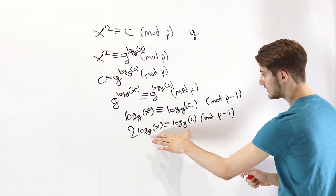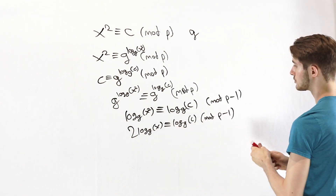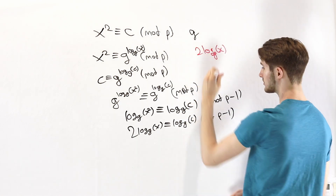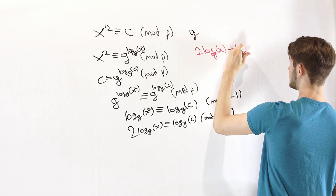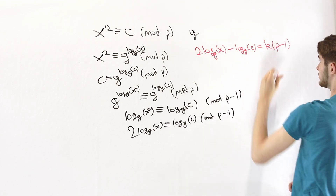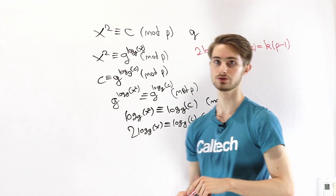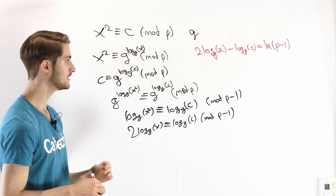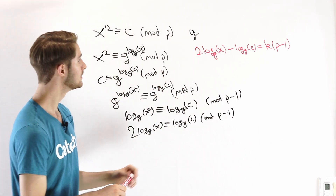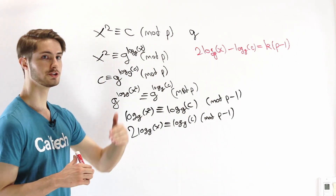We can rewrite this using the definition of congruence mod n: two times log base g of x minus log base g of C has to be some integer multiple of p minus 1. Now let's think about when this equation could have a solution. Because the powers of g give us all numbers mod p except 0, we can make log base g of x any value we want from 0 to p minus 1.